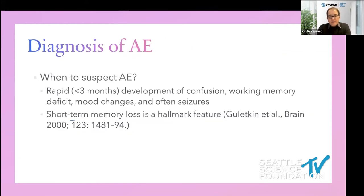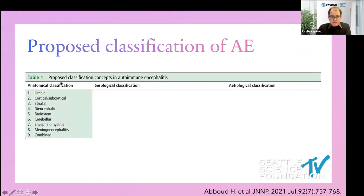When should you suspect autoimmune encephalitis? The primary clue is rapid — meaning less than three months — development of confusion, working memory deficit, mood changes, and often seizures. Short-term memory loss is definitely a hallmark feature. A recent review proposed classification of autoimmune encephalitis based on its location into limbic, cortical, subcortical, striatal, diencephalic, and other categories.